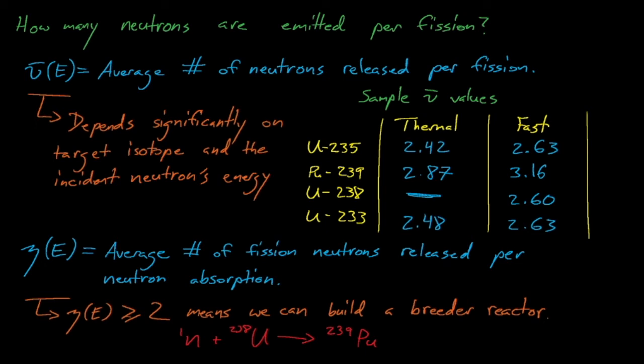We will need to build breeder reactors eventually, but for now they are not essential. We aren't going to run out of uranium-235 for a very long time, so now it's generally not worth building more elaborate and possibly more expensive breeder reactors. For now, the once-through fuel cycle works just fine. However, when we eventually do want to build breeder reactors, we will probably have to build breeder reactors that rely on fissioning either plutonium-239 or uranium-233.